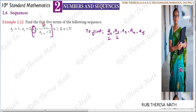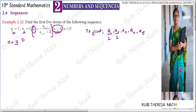Here, an is defined as a(n-1) divided by a(n-2), plus 3, where n is greater than or equal to 3. So you can substitute n values starting from 3 only. That is why the first term and second term have already been given.